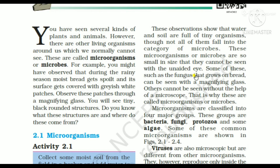These microorganisms and microbes are so small in size that they cannot be seen with the unaided eye. Some of these, such as the fungus that grows on bread, can be seen with a magnifying glass. Others cannot be seen without the help of a microscope. That is why these are called microorganisms or microbes.